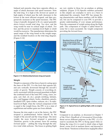Weight is a measure of the force of gravity acting upon the mass of the PPC. It is the force that opposes lift and acts vertically downward through the aircraft's center of gravity. Weight consists of everything directly associated with the powered parachute in flight: the combined load of the total PPC — wing, risers, engine, cart, fuel, oil, etc. — people, clothing, helmets, etc., and baggage such as charts, books, checklists, pencils, handheld GPS, spare clothes, and so on.